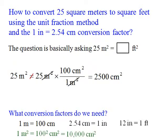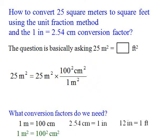One meter square is actually equal to 10,000 centimeter square. So let's correct it: 25 meters square equals 25 meters square times 100 squared centimeters over one meter square, which gives 10,000 centimeters squared per meter squared.